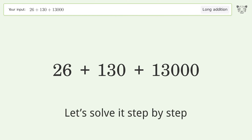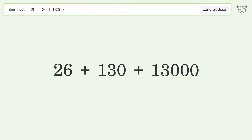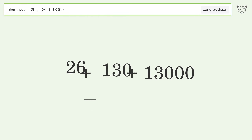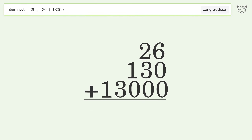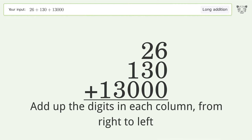Let's solve it step by step. Rewrite the numbers from top to bottom, aligned by their place values. Add up the digits in each column from right to left.